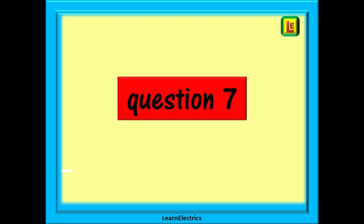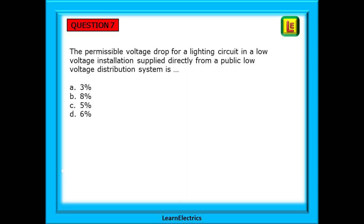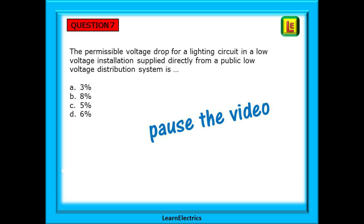Question 7: the permissible voltage drop for a lighting circuit in the low voltage installation supplied directly from a public low voltage distribution system is what? Stop the video again, find the keywords, find the table, write down the answer.